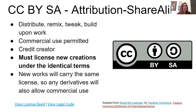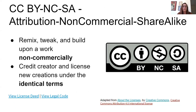CC BY Share Alike — anything with the Share Alike symbol, the SA — means that if you're creating something new using a resource that already has this license, you have to license your new work with the same license. Only really worry about Share Alike if you are creating new things. There's also Share Alike Non-Commercial Attribution, CC BY NC-SA — you can't make a profit, and again you have to license with an identical license if you're creating something new.